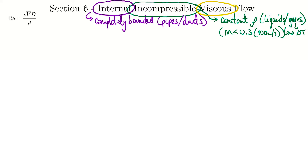Previously we dealt with inviscid flow cases, but this section explicitly addresses viscous flow. That means we're now dealing with shear stresses — or in more general terms, friction. That's a big part of what we calculate in section 6: how does friction within internal flows, in pipes for example, work? How do we figure out what that friction is, and how does friction influence the flow? Mathematically, that means we need to include viscous terms in our analysis.